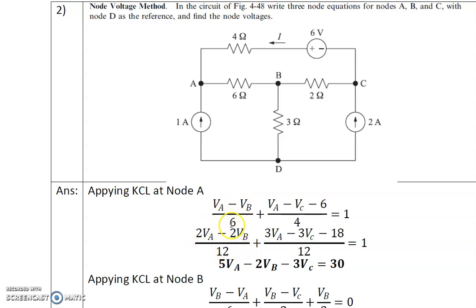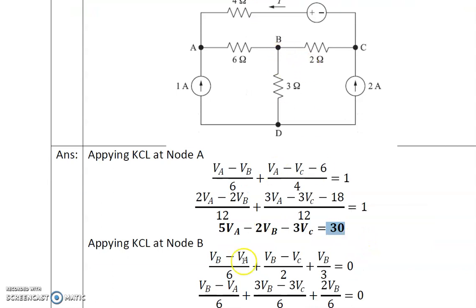Transferring 12 to the right side: 2VA + 3VA = 5VA, minus 2VB, minus 3VC, and minus 18 becomes plus 18 on the right side, giving 12 + 18 = 30. So the first equation is: 5VA minus 2VB minus 3VC = 30. Similarly, applying KCL at node B: (VB minus VA)/6 + (VB minus VC)/2 + VB/3 = 0.